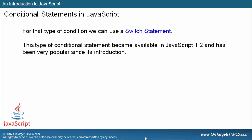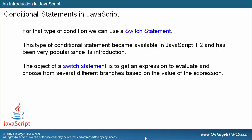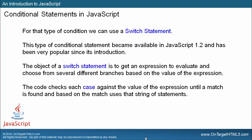This type of conditional statement became available in JavaScript 1.2 and has been very popular since its introduction. The switch statement is available in most programming languages — the first language I was introduced to it in was C. The object of a switch statement is to get an expression to evaluate and choose from several different branches based on the value of that expression. The code checks each case against the value of the expression until a match is found, and based on the match, uses that string of statements for that particular case.